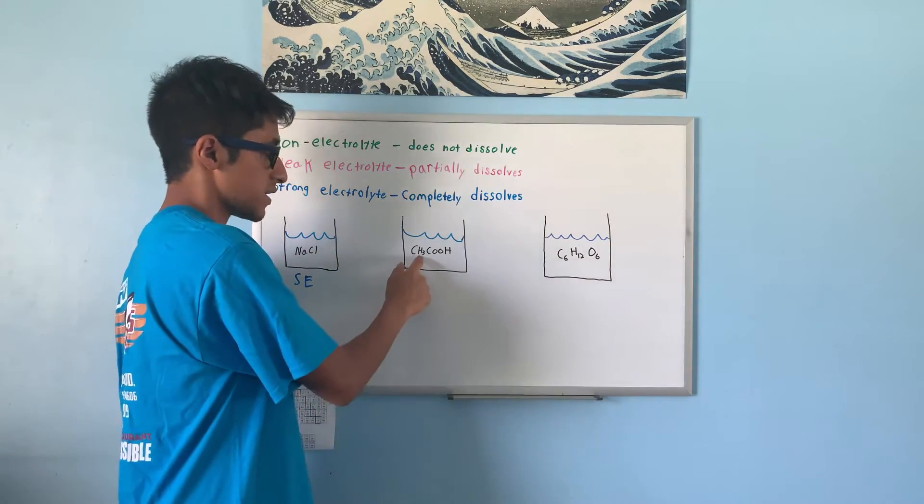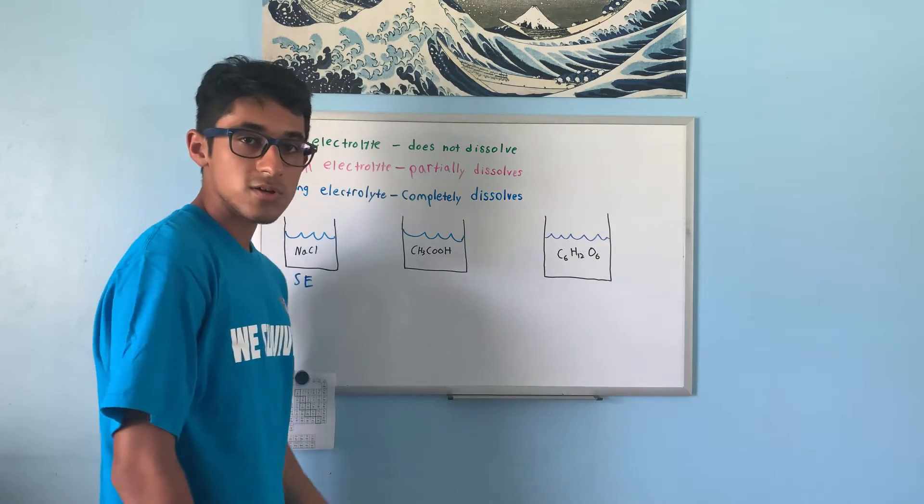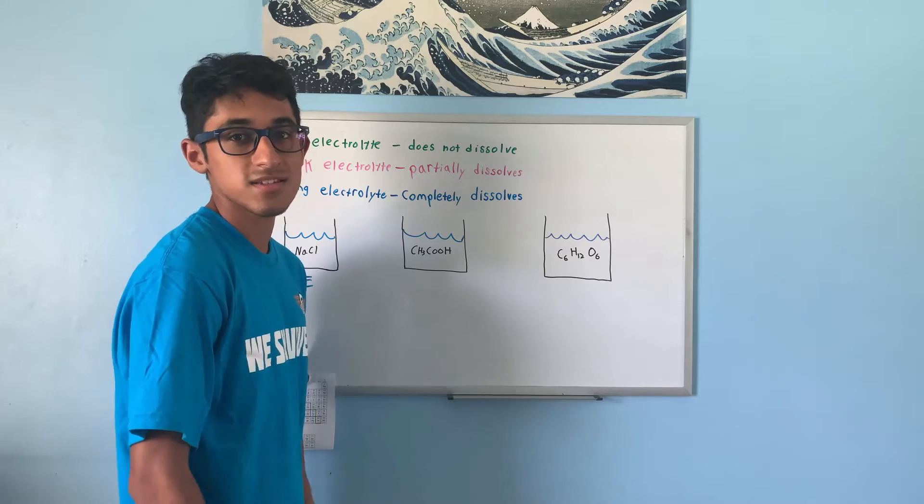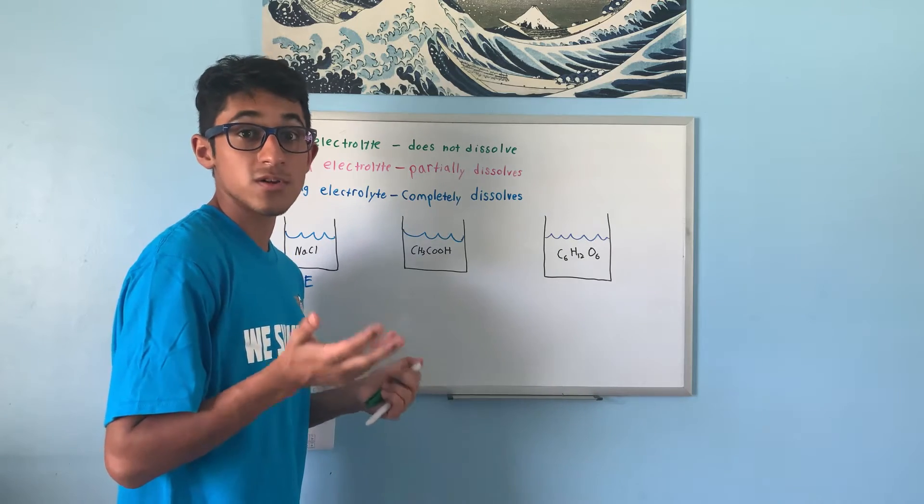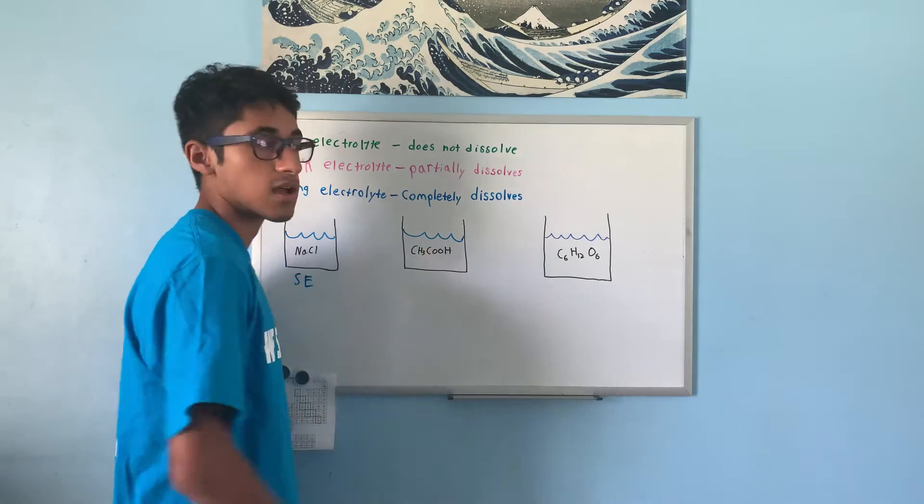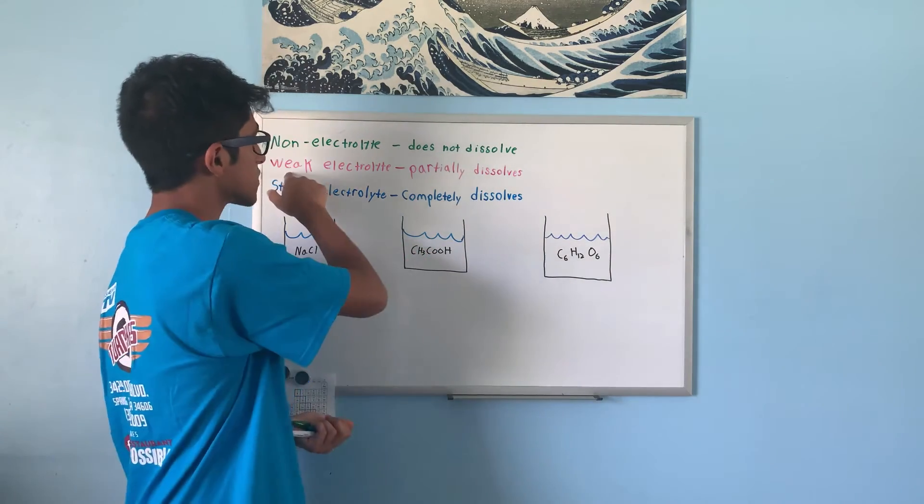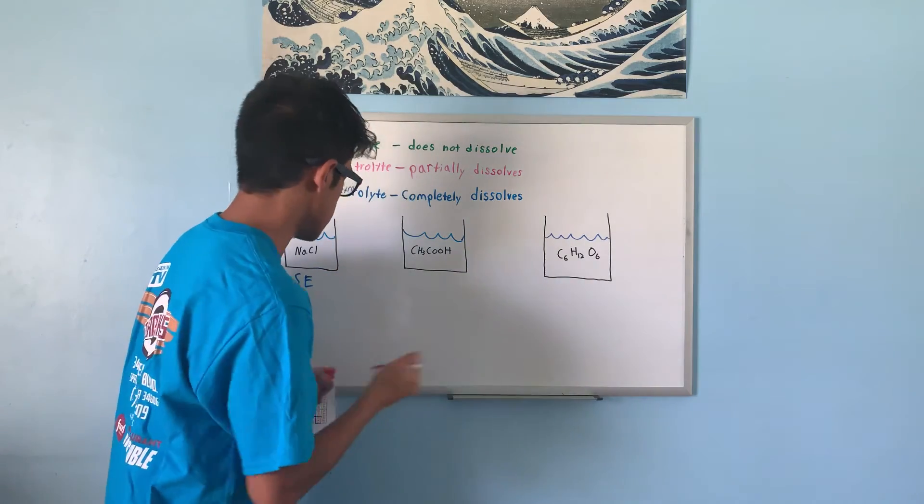Next, we have CH3COOH or acetic acid. We know that acetic acid is a weak acid. This means that it only partially dissolves into hydrogen atoms and a negative ion. Since it partially dissolves, it is a weak electrolyte.